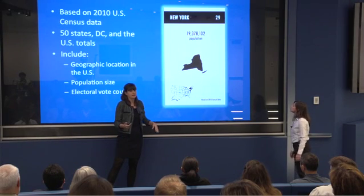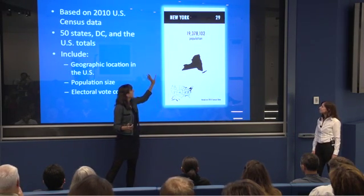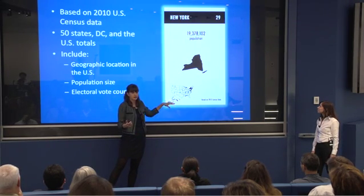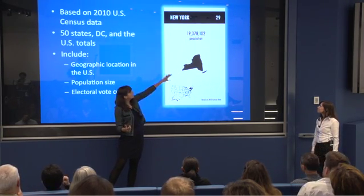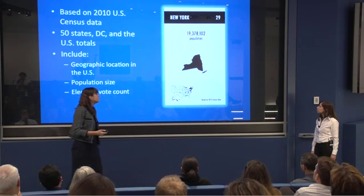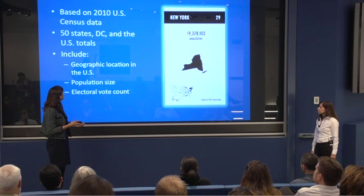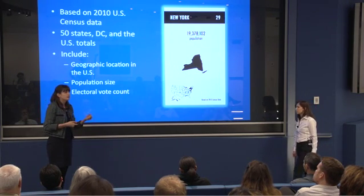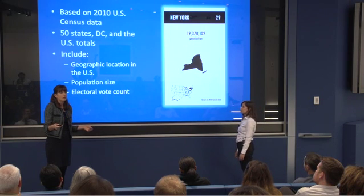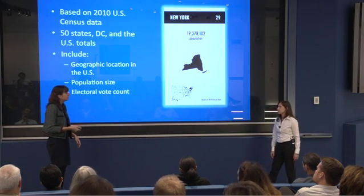Coming out of this activity, the least they learned is where Nebraska was — that was great. The cards have the population from the 2010 census, which was a plug for census data, and then the electoral college number. In both of our classes, the students used these cards and were able to answer a couple of different leading questions that we asked them, and then they ended up asking their own questions that really forged new directions in this activity.